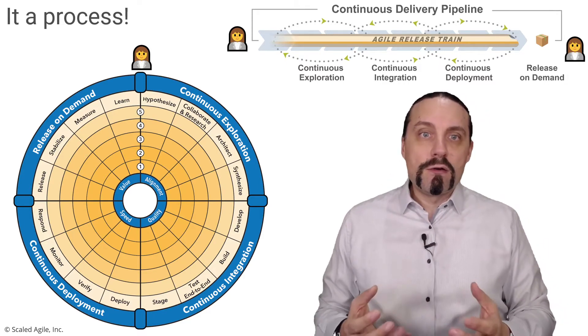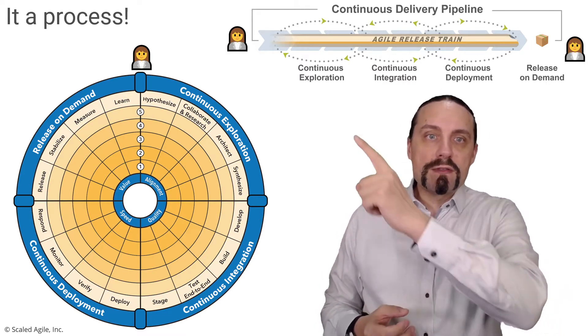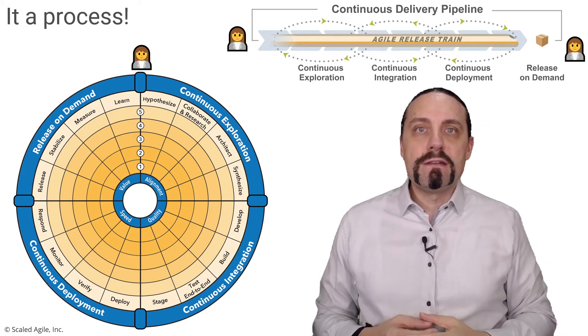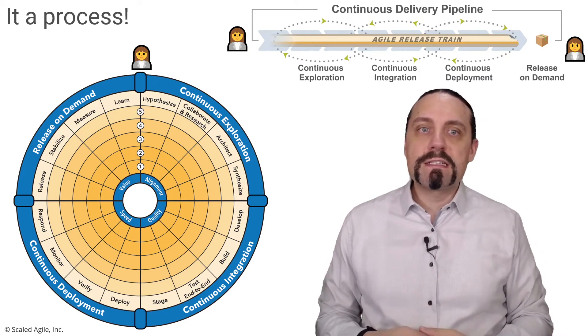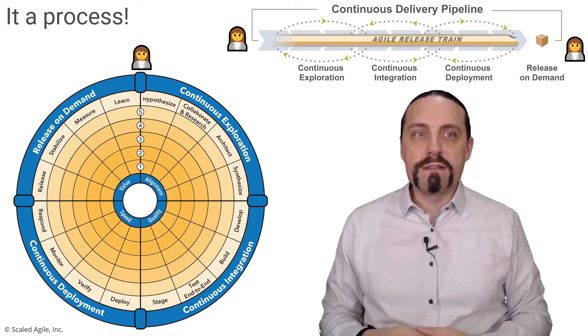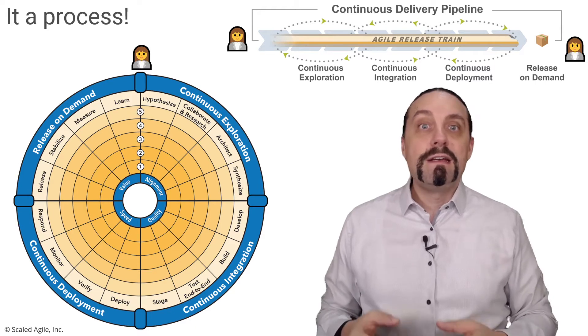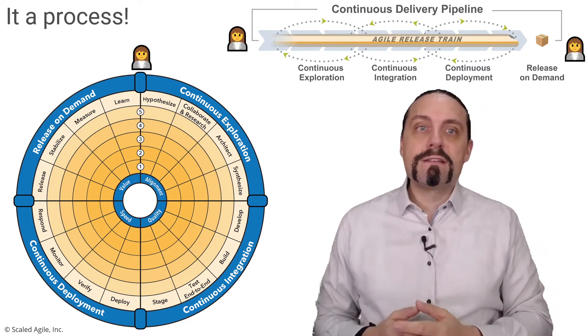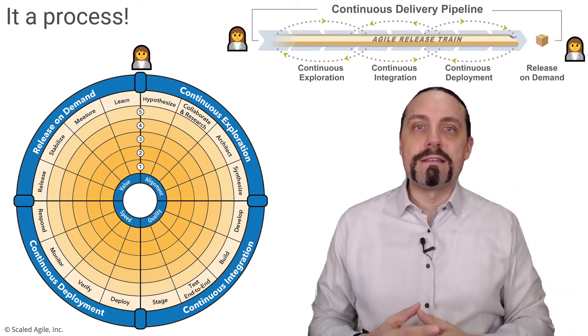The whole process is also the continuous delivery pipeline with the four dimensions of continuous exploration, continuous integration, continuous deployment and release on demand. And as the DevOps health radar it starts with the customer and it ends with the customer.